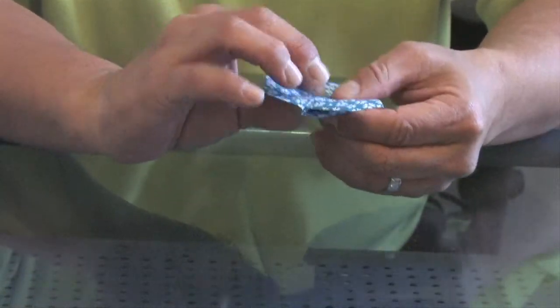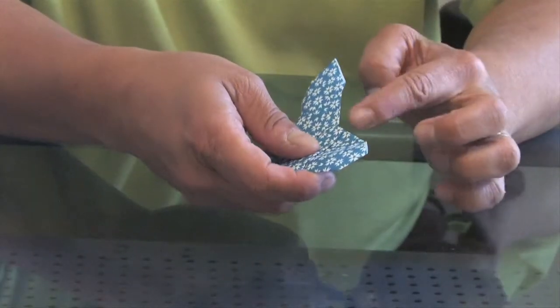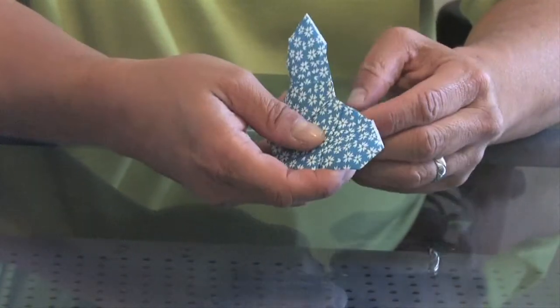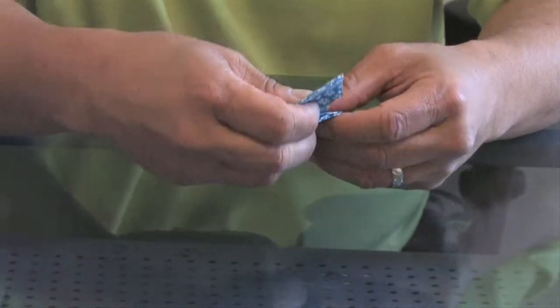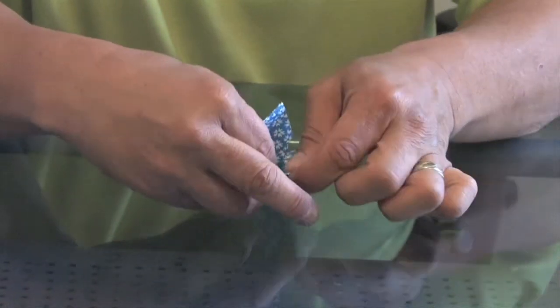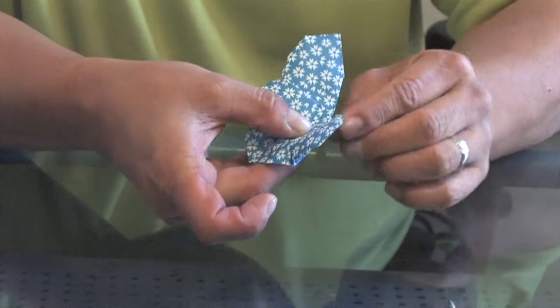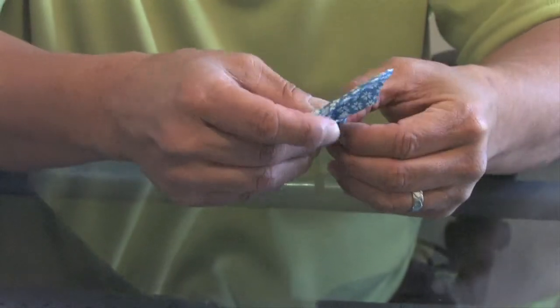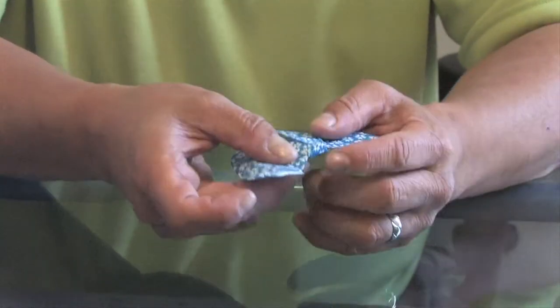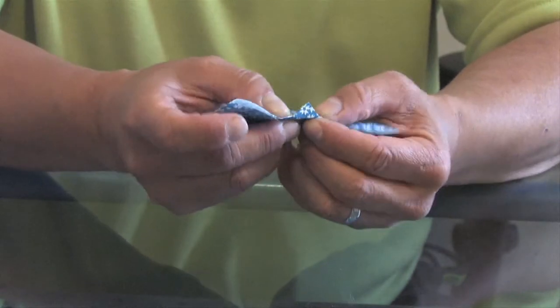This is the head. I'm going to flip that over. So now the head is fitting in between this part here. And we're just going to fold the head over once. So you have a little triangle sticking up.